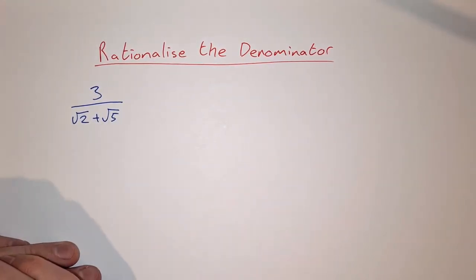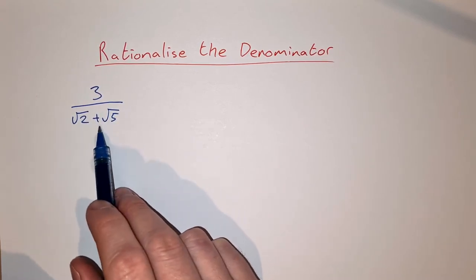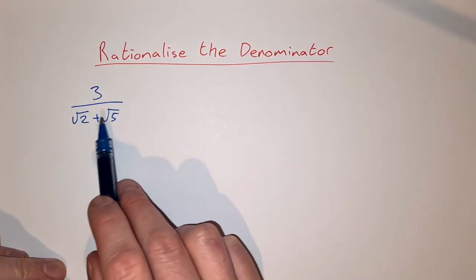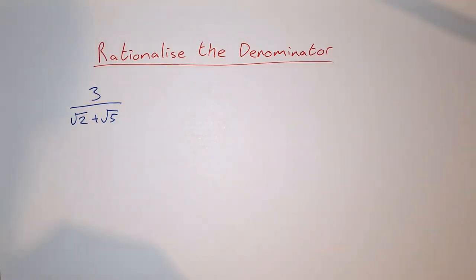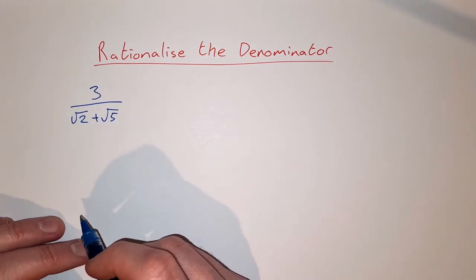So in this video I'm just going to show you another example of rationalizing the denominator of a surd fraction. We can see this fraction here has roots on the bottom and basically we want to rewrite the fraction where we don't have roots on the bottom of the fraction.